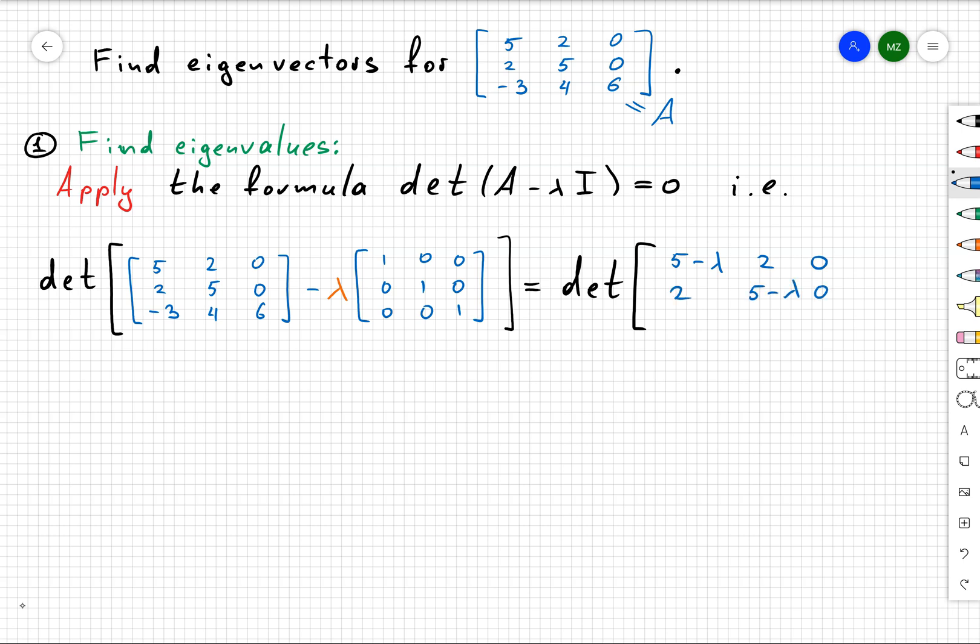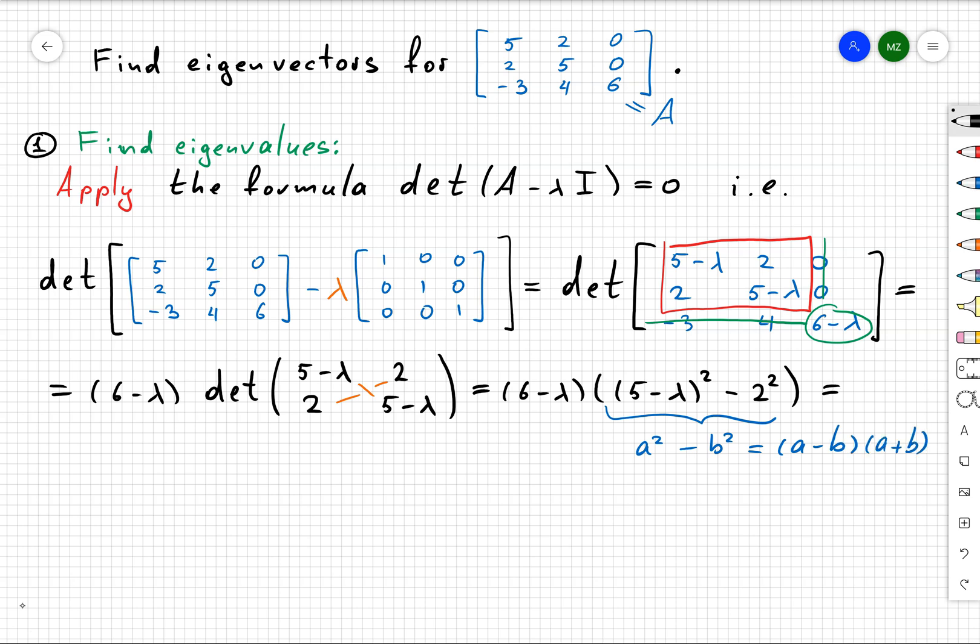So we're going to obtain the following determinant where you can check my algebra. By definition of determinant, we want to take the third column and third row and throw it away. We're going to get that small 2x2 determinant. After doing some algebra and noticing that a² - b² = (a - b)(a + b), we're going to obtain that our eigenvalues are 6, 3, and 7.